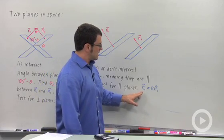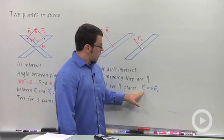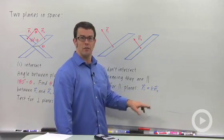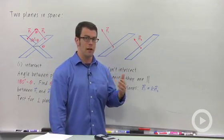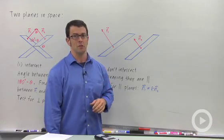And the test for parallel planes is that one vector, one normal vector, is a scalar multiple of the other. So, if you recognize that one of these normals is a scalar multiple, say two times the other or minus one times the other, then the planes are parallel.